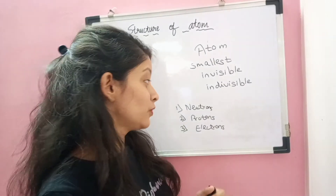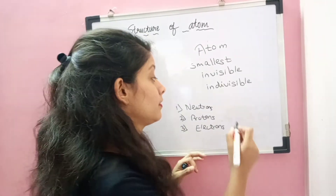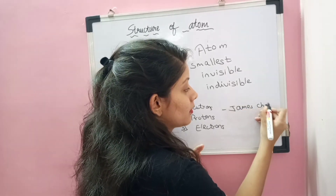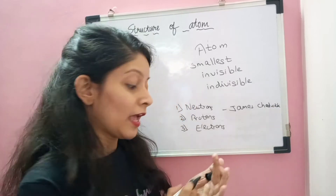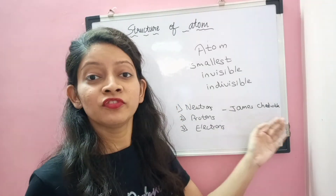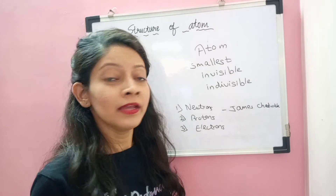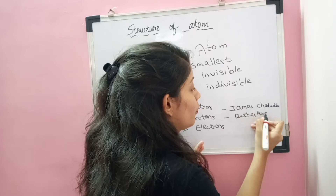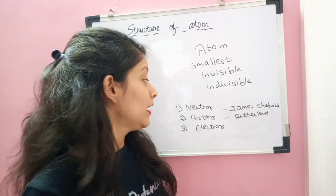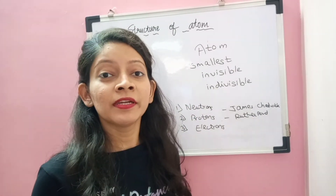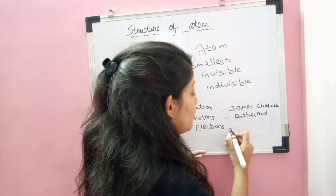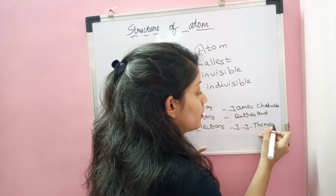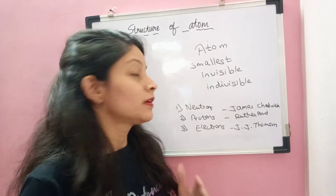Neutrons were discovered by Sir James Chadwick. Protons were discovered by Sir Rutherford, and protons are also known as canal ray. Electrons were discovered by Sir J.J. Thomson, and electrons are also known as cathode ray.